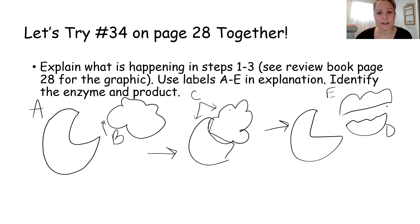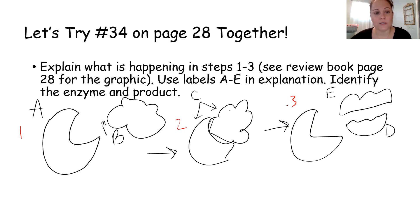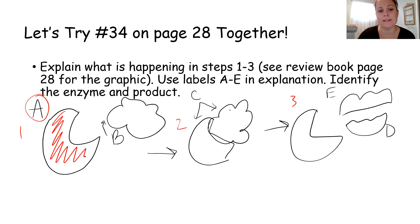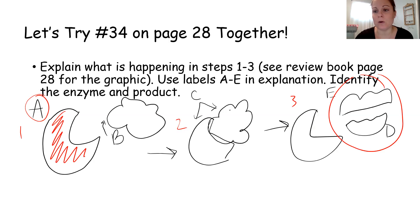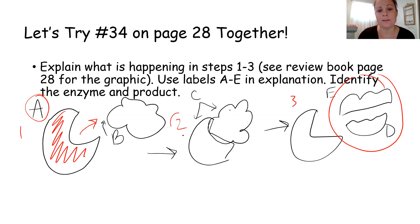On page 28, number 34 — let's work through the enzyme diagram together, explaining steps 1 through 3 using labels A through E. Label A is the enzyme because it remains unchanged from beginning to end. The products are D and E — what was changed as a result of the enzyme. The enzyme acts upon the substrate, which is B — let's say glucose in cellular respiration. They come together in step 2, letter C, and then the enzyme remains unchanged but produces products E and D, breaking the bonds of glucose in cellular respiration.